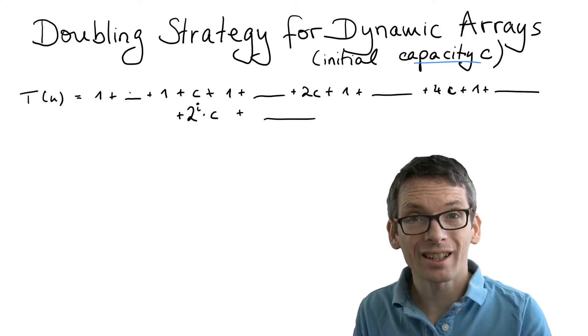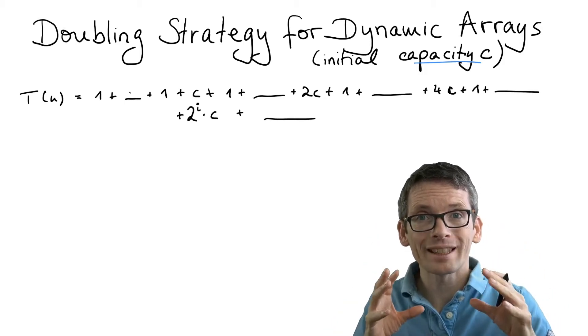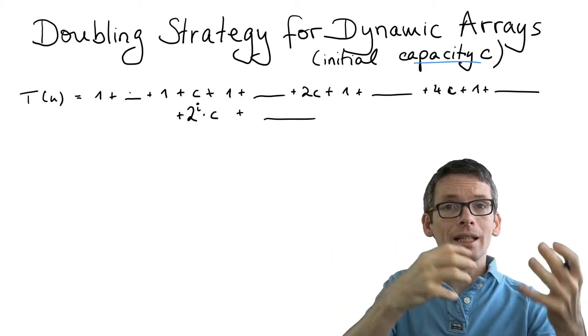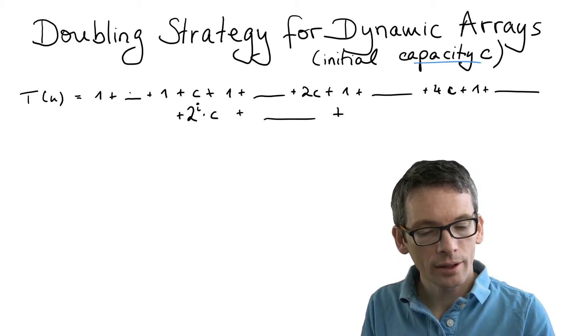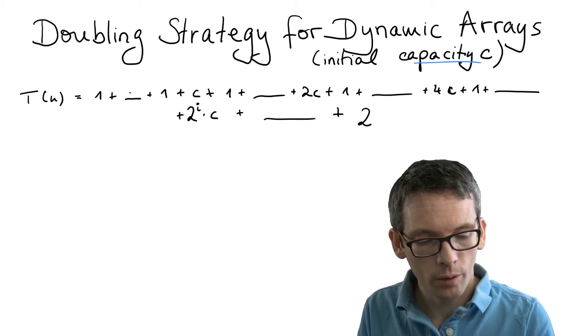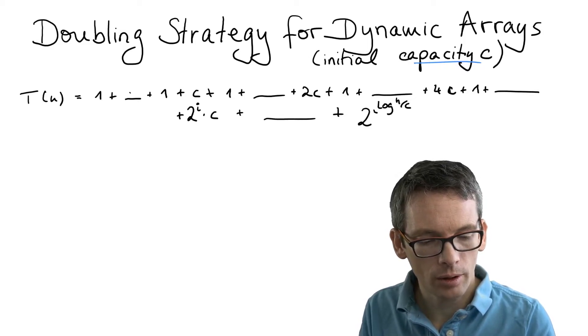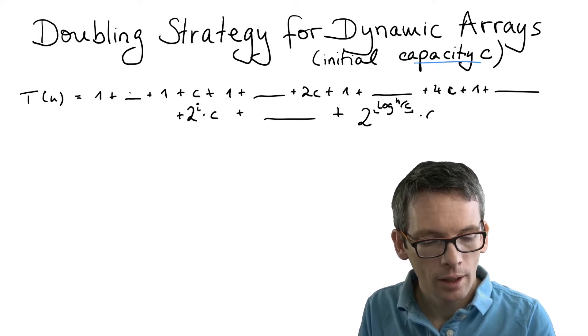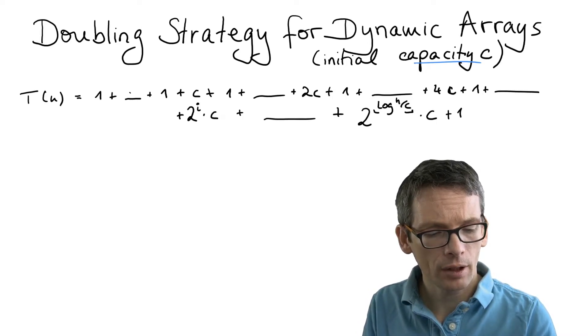The question is how far does this continue? It continues until I have the last term of the type 2 to the i times c, which is below n. So the last doubling power is 2 to the logarithm of n divided by c, rounded down, times c. And then we might at the end have a couple of more ones.